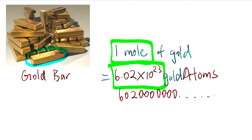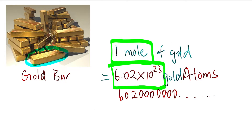Let's use the same gold bar — how much does it weigh? Let's say it's 1000 grams. Every time I don't want to keep writing 1000 grams — is there a simpler way? Yes. We know that 1 kg is the same as 1000 grams. So it's the same kind of relationship for moles.